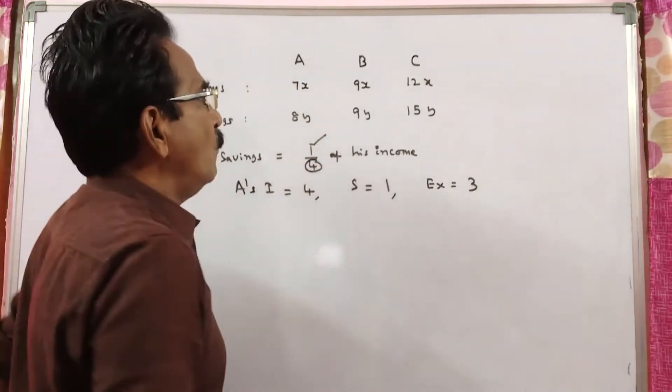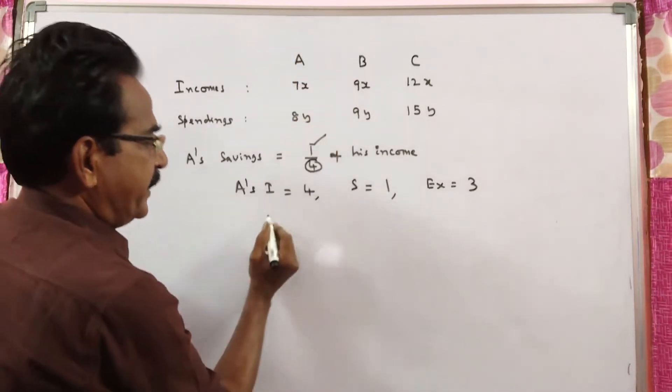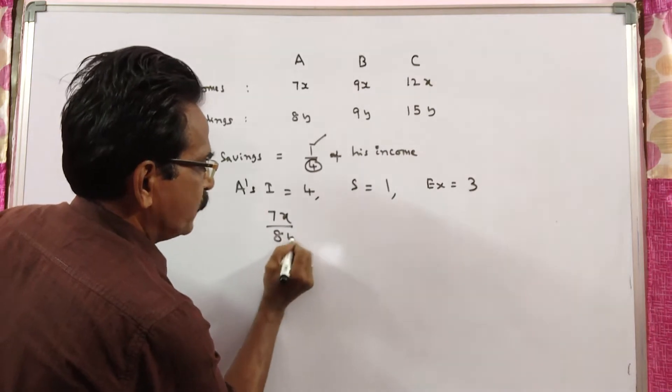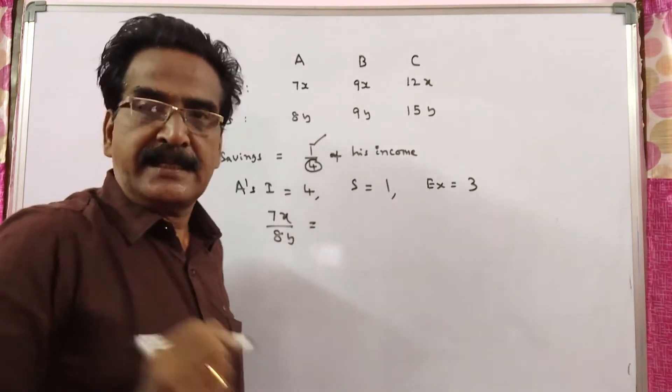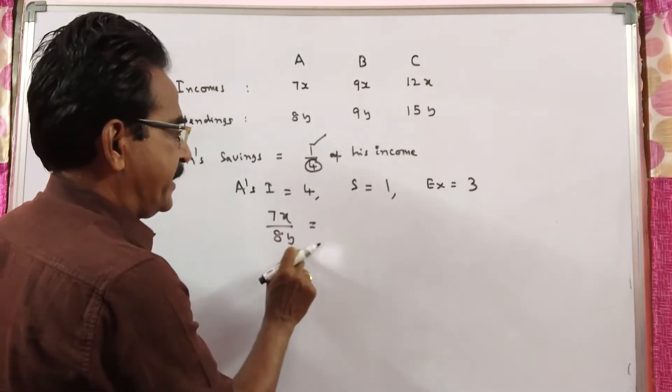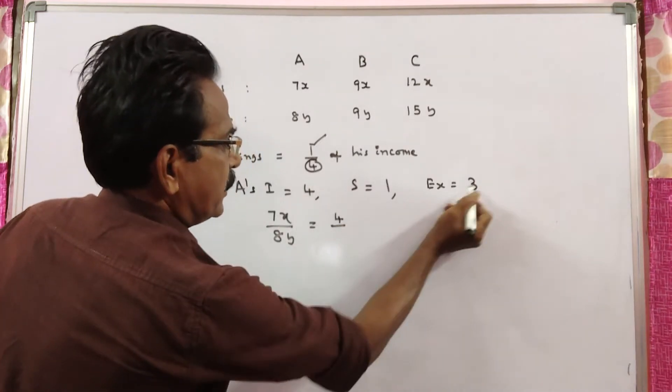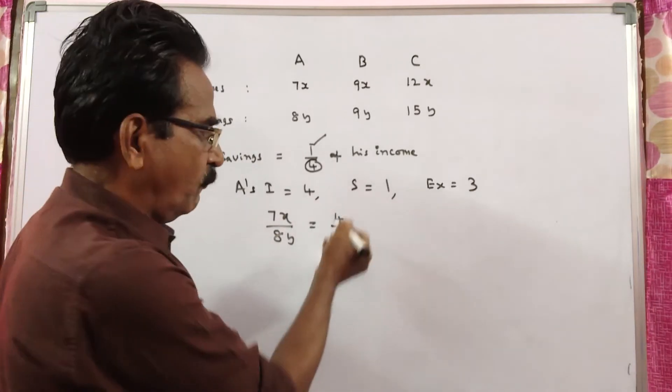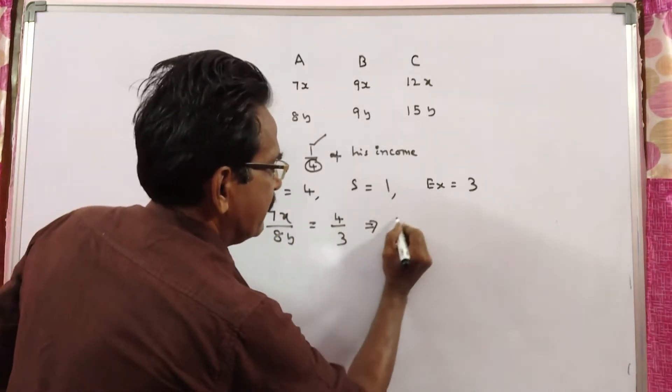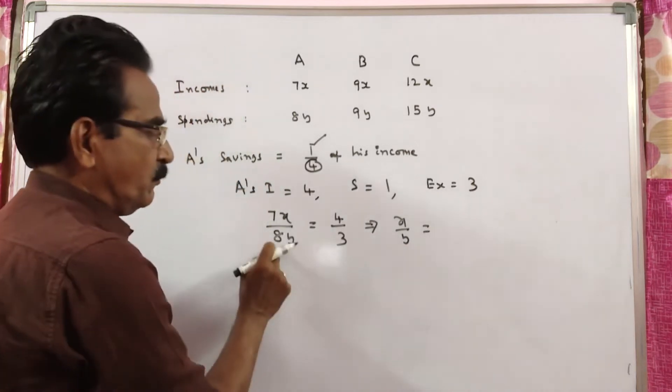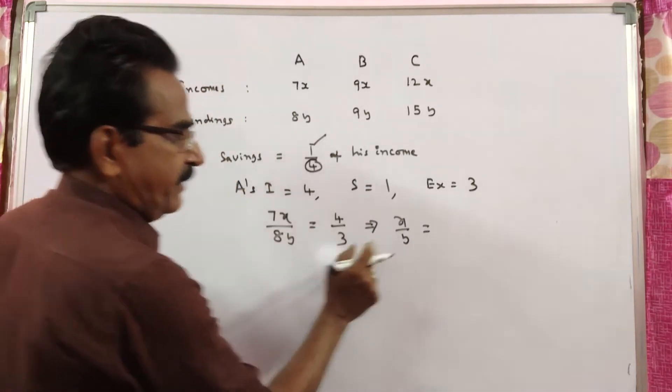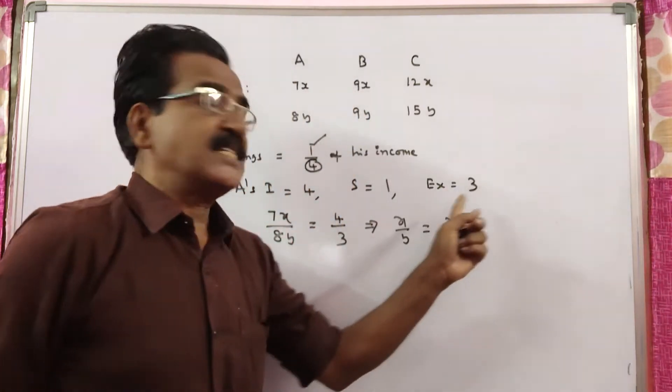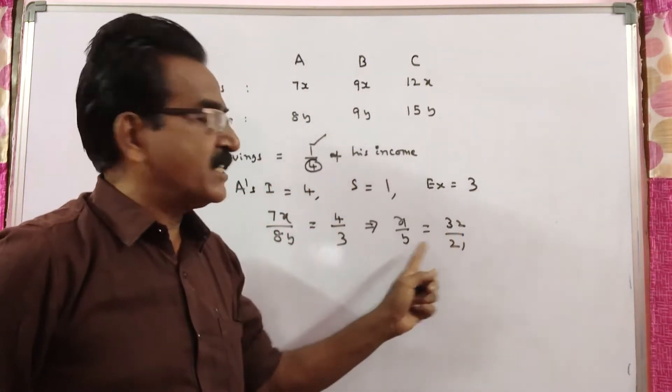Now the ratio of A's income and expenditure, that is 7x by 8y. 7x by 8y is equal to income by expenditure, income 4 and expenditure 3. So 7x by 8y is equal to 4 by 3. It implies x by y is equal to 32 by 21. Now x is equal to 32 and y is equal to 21.